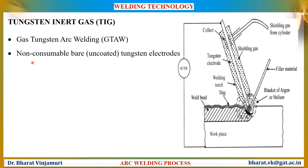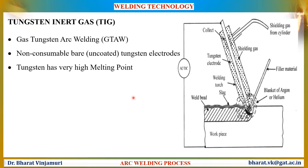It makes use of non-consumable uncoated tungsten electrodes. Coating of flux is not necessary in this process because the shielding gas will form a protective cover on the weld zone. Tungsten also has a very high melting point of up to 3500 degrees Celsius, so the tungsten electrodes will never get consumed.